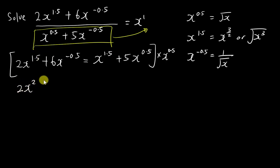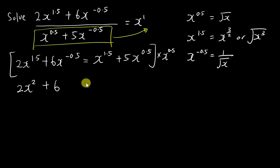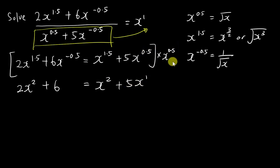So this term becomes 2x squared. Then negative 0.5 plus 0.5 becomes 0, so this term becomes just 6 — since x to the power 0 is 1. This other term becomes x squared as well, and this one becomes plus 5x to the power 1, since 0.5 plus 0.5 is 1.